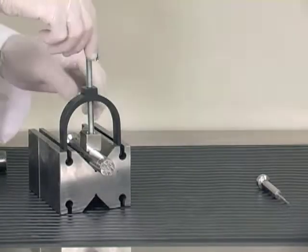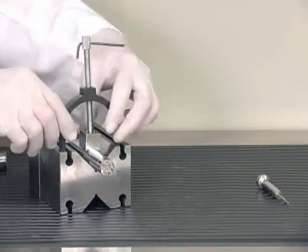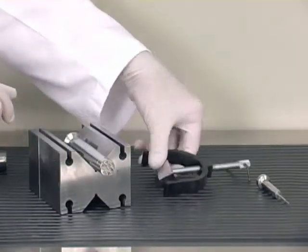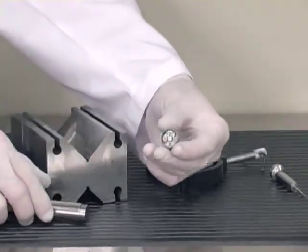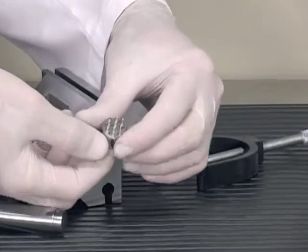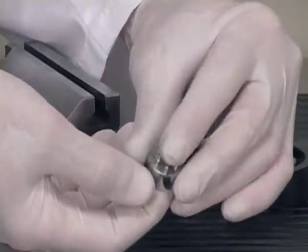Now we remove the punch from the v-block and we remove the cap from the punch. Then we remove the inserts from the cap.